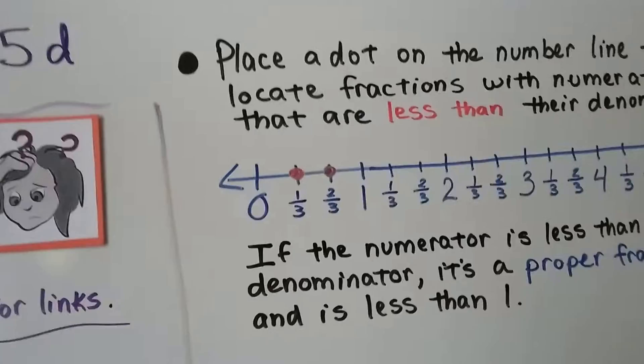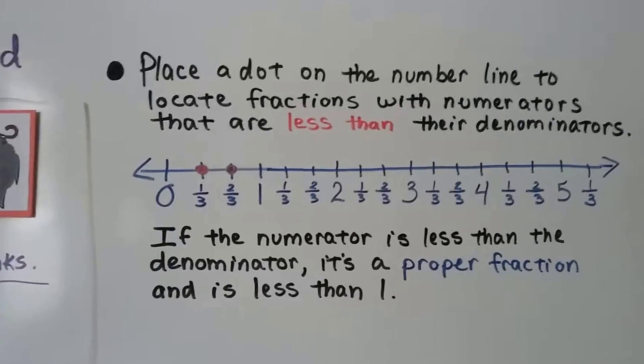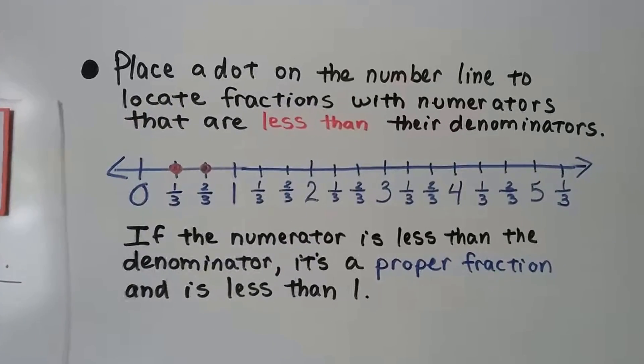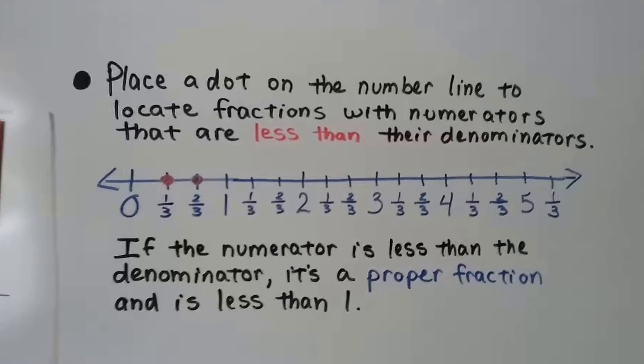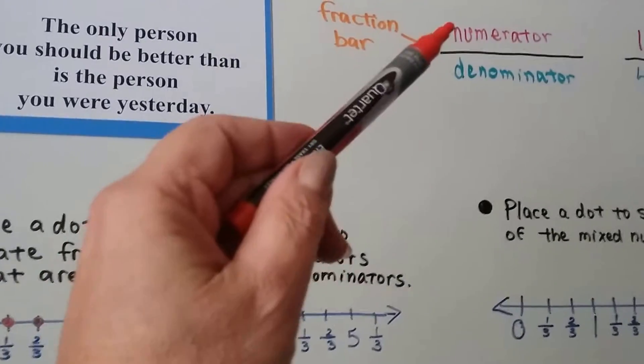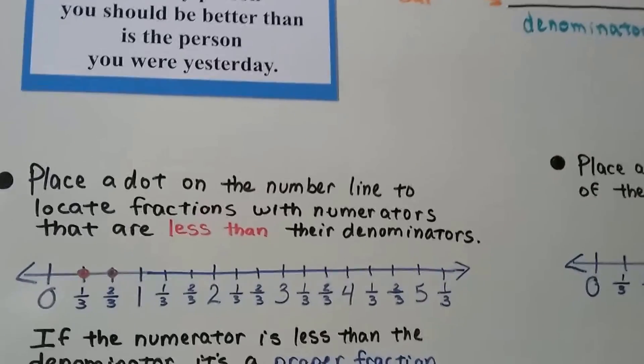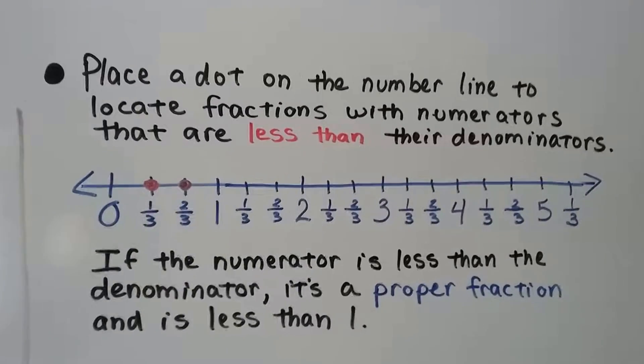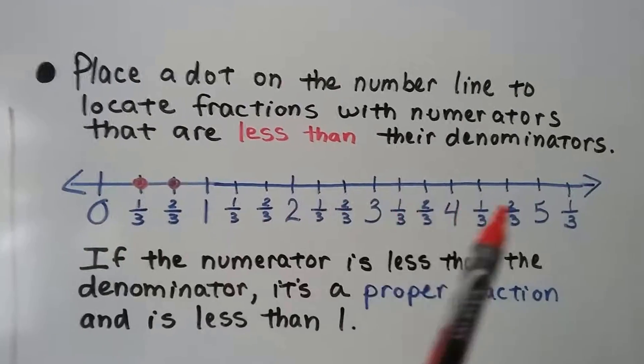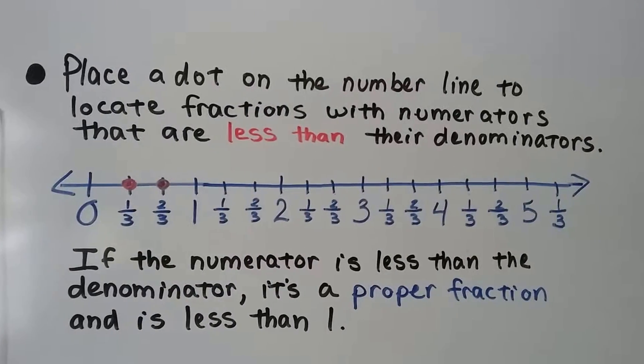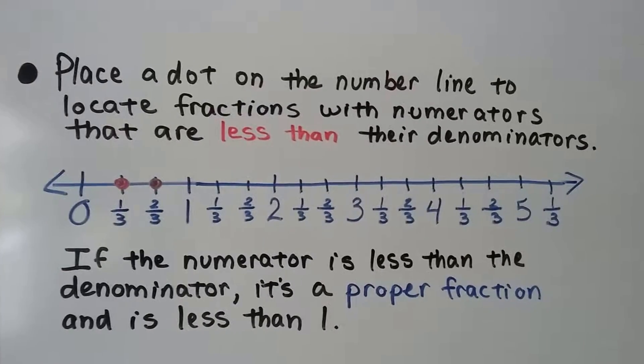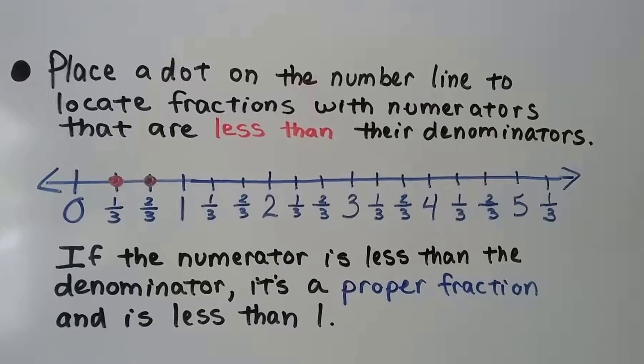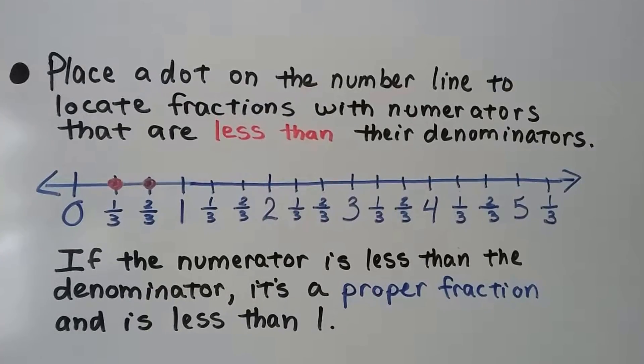It says to place a dot on the number line to locate fractions with numerators that are less than their denominators. Remember, the numerator is the top one, the denominator is the bottom one. So we're looking for ones that have a small top, a small numerator.